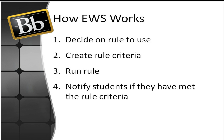There are four basic steps to make the Early Warning System or rule work for you. You first decide on the type of rule that you want to use, whether it's grade, due date, or access associated. You will then create your rule criteria. Thirdly, you will run the criteria to see if any students actually met the criteria. And lastly, you will notify the students of further actions since they met the criteria.